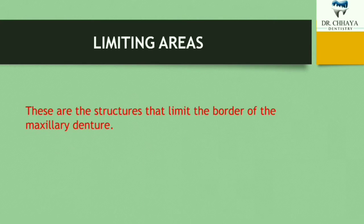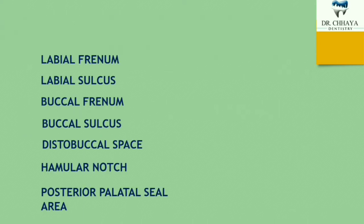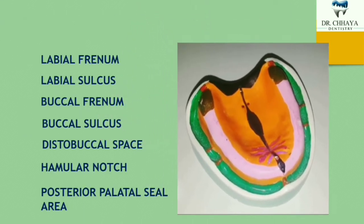Let's start from limiting areas first. These are the structures that limit the border of the maxillary denture — they tell us not to extend the border beyond them. Suppose this colorful cast represents the edentulous mouth of a patient. We can appreciate these landmarks present in an edentulous patient, though in some exceptional patients these landmarks may not be clearly visible due to resorption, excess tissue, or bone growth. There are seven limiting structures to keep in mind.